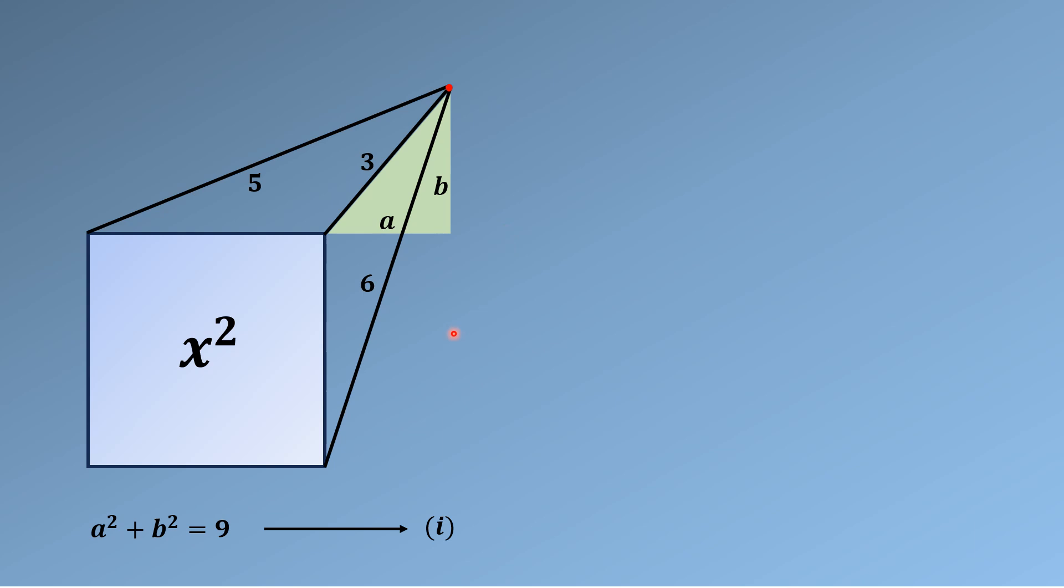We draw another right triangle over here. We can see that this length is equal to this length which we have called b, and this length is equal to X + a. So the legs of this right triangle are b and X + a, while its hypotenuse is 5 units.